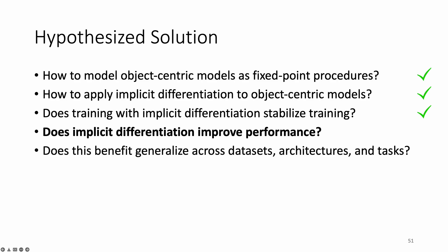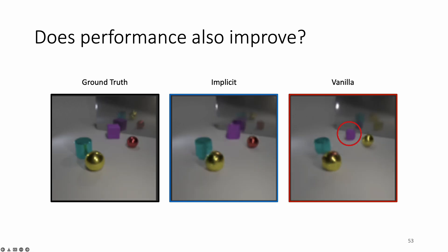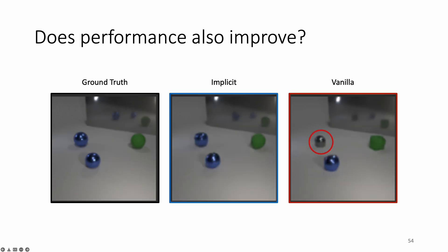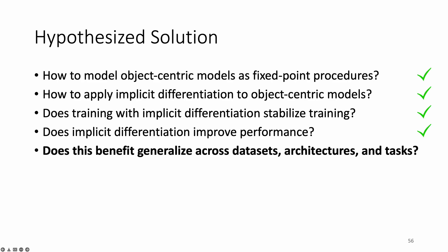Now let's ask whether better optimization also leads to better results. When we look at the reconstruction quality, we observe that the vanilla version sometimes misses objects, changes their size, or changes their colors, whereas the implicit version generally matches the ground truth much more closely. In terms of mean squared error, the implicit version has almost a 7x improvement over its vanilla counterpart.